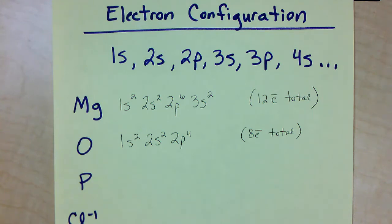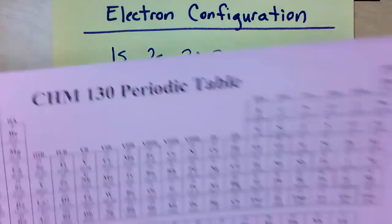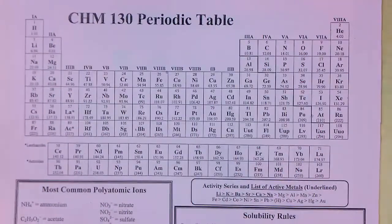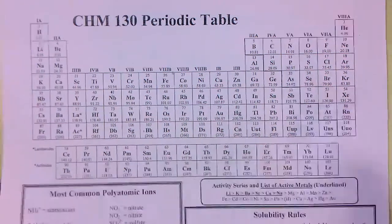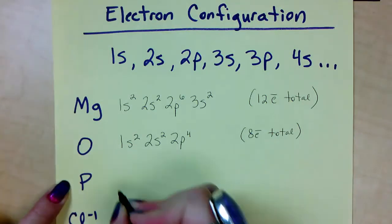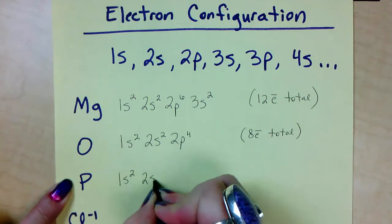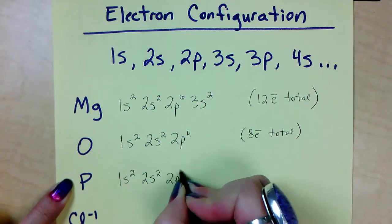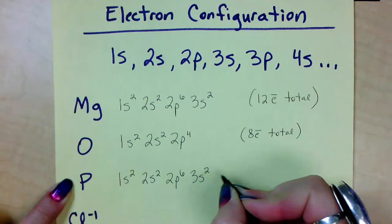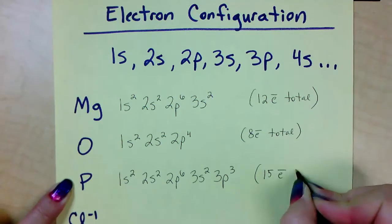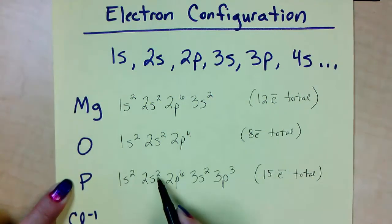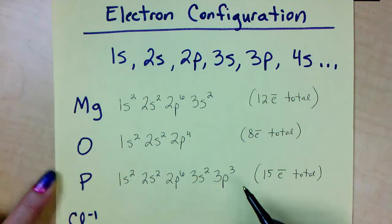I want you to try phosphorus on your own — go ahead and pause right now. Phosphorus is number 15, so 15 protons, and if it's an atom, 15 electrons. Filling in up to 15: 1s2, 2s2, 2p6, 3s2, 3p3. That should be 15 electrons total: 2+2=4, +6=10, +2=12, +3=15. Good job.